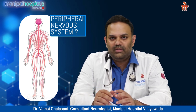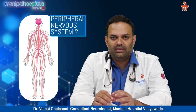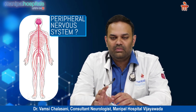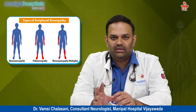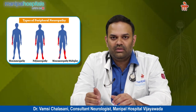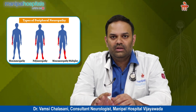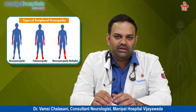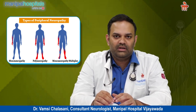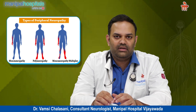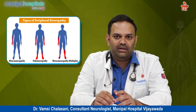The second type is mononeuropathy multiplex, which involves more than one nerve — multiple nerves involved in different patterns, one nerve, then another nerve. Common causes include diabetes, vascular disorders, and leprosy.